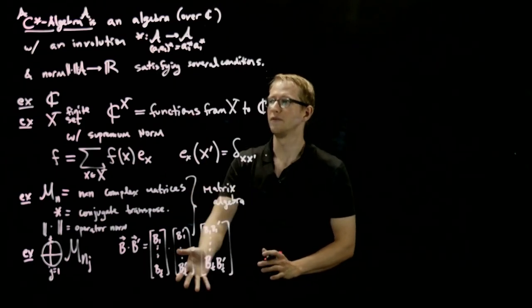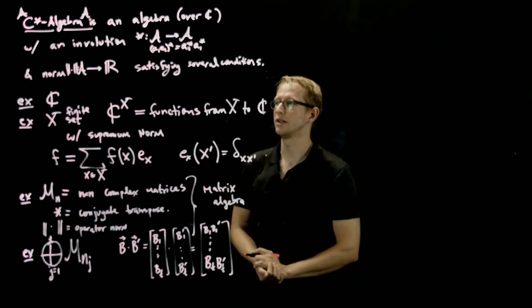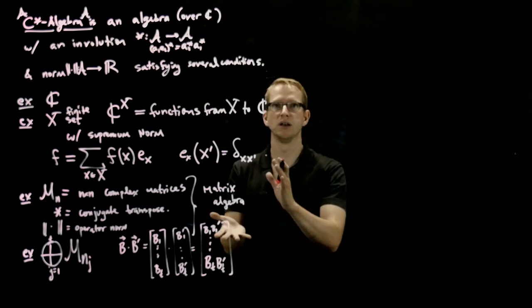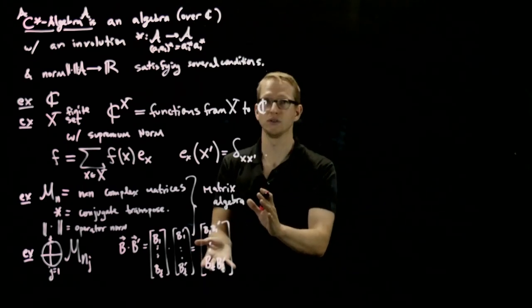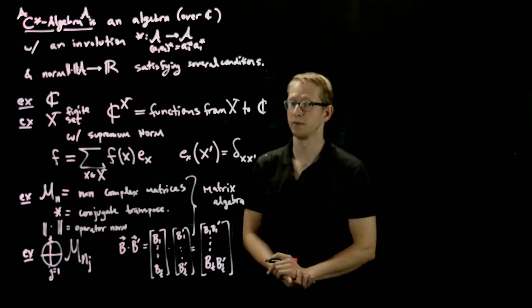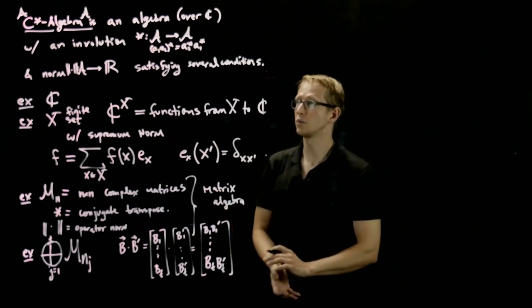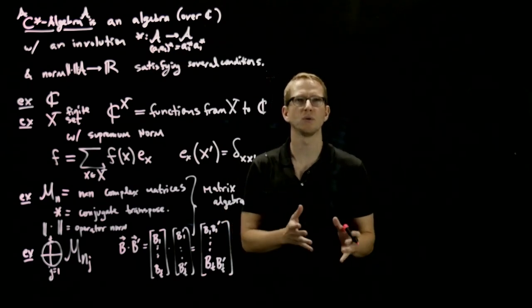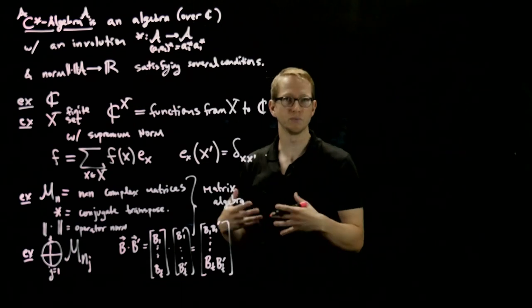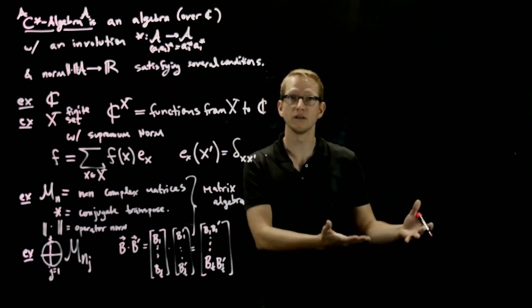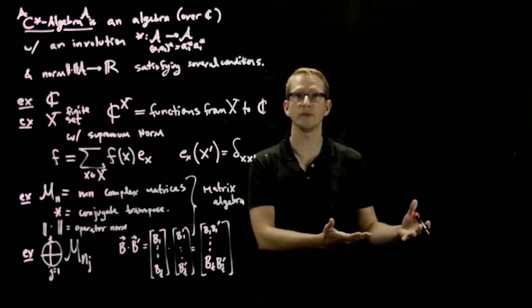These are all very useful and interesting examples of C*-algebras. In fact, all finite dimensional C*-algebras look like these. So these are the objects in the category we'll be working with — the category of C*-algebras and their associated morphisms.